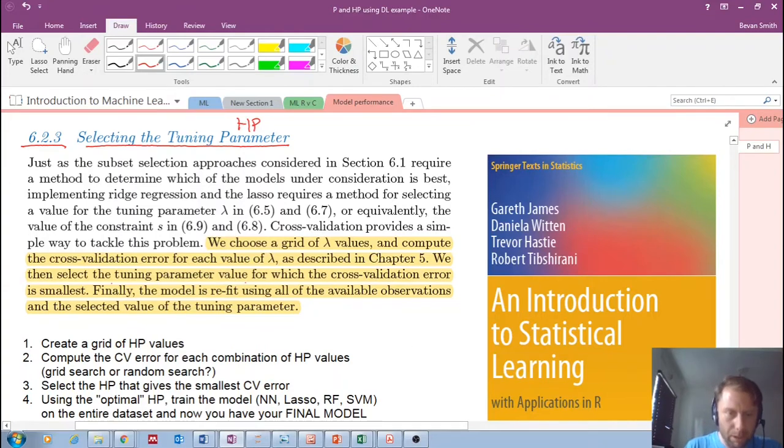The example they use is from lasso. If you recall from previous videos, or perhaps you've heard about this already, lasso is essentially a regularization technique that has a specific hyper parameter called the lambda value. I'm not going to go into that in this video, but just know that it's a hyper parameter. Let's read what this textbook says and follow the steps here.